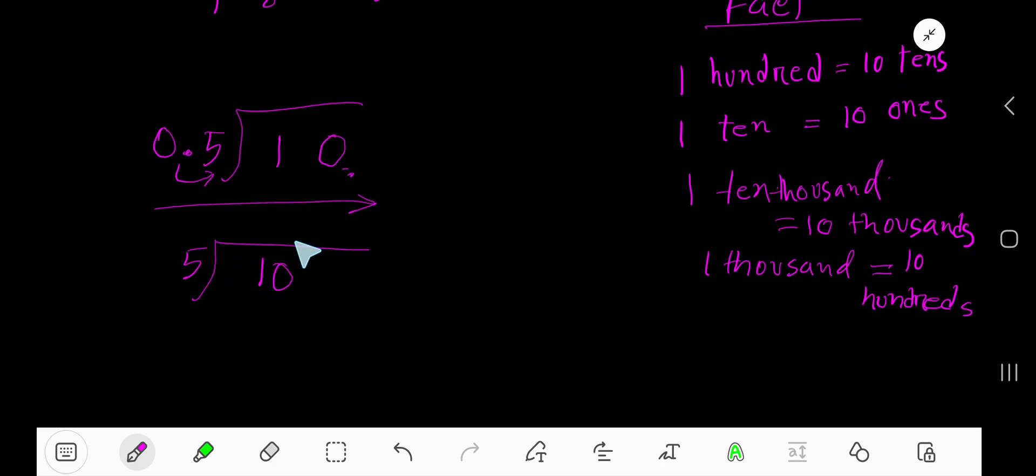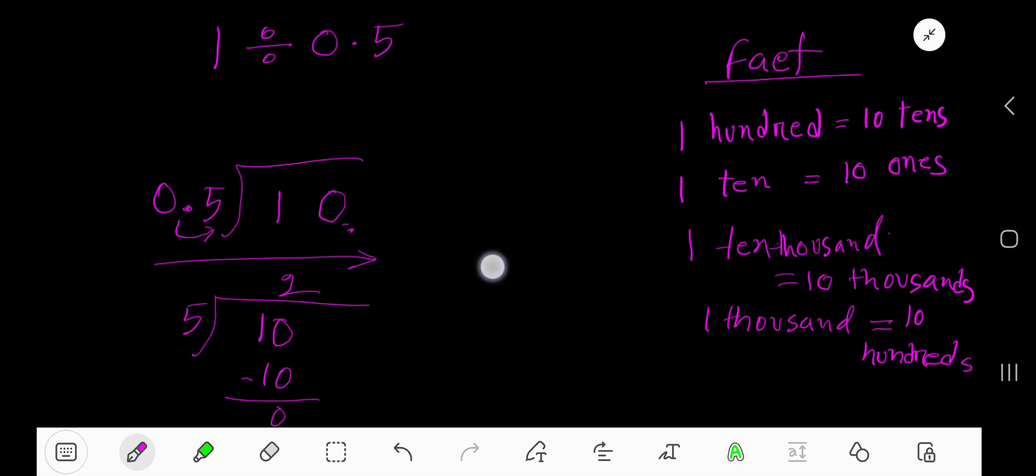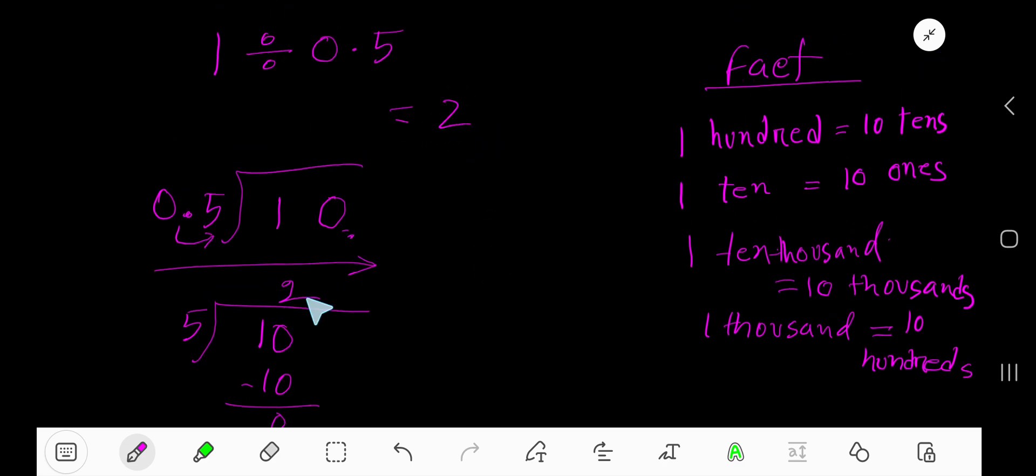Now divide. 5 goes into 10 how many times? 2 times. Now multiply 2 times 5, equals 10. So if you subtract, you are getting 0. That is, your result is 2. That is your answer is 2.